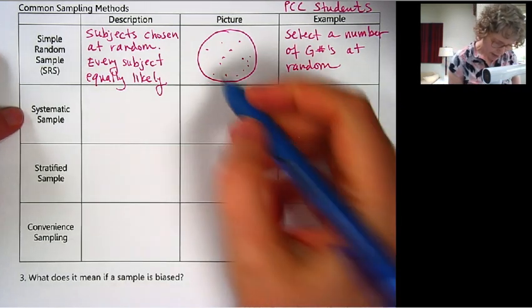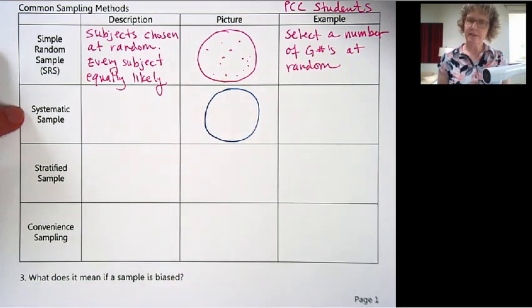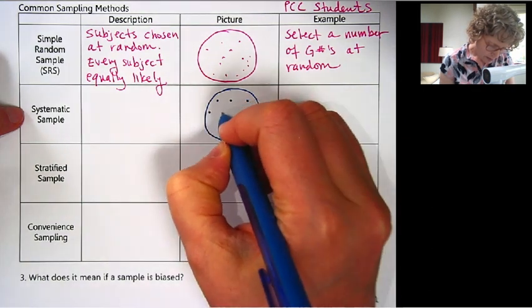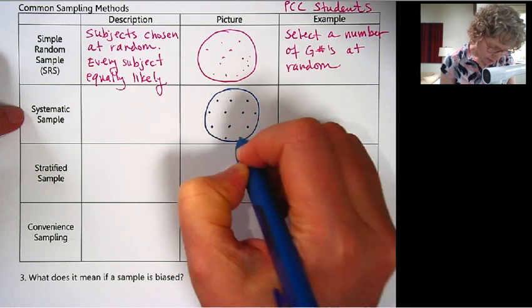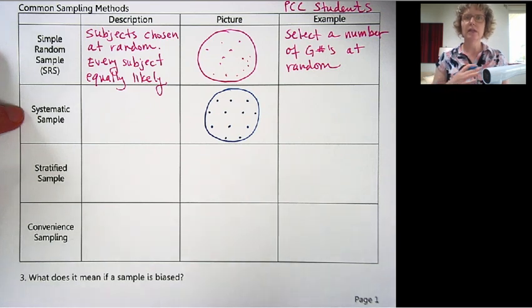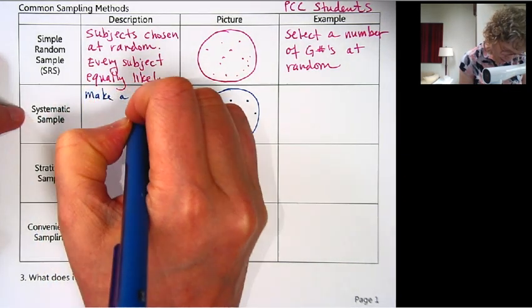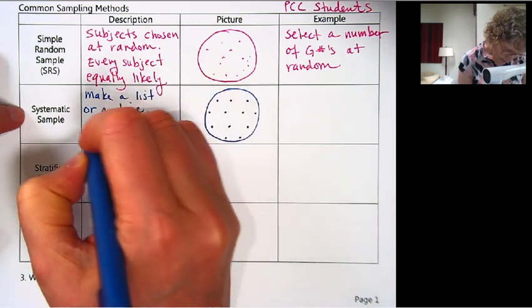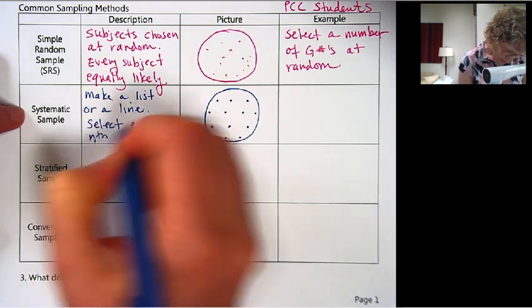The next one is a systematic sample. There are some times when a systematic sample might be easier. Systematic means you pick either from a list or a line every nth person or subject. So you get an even spacing. So description for this one is make a list or a line. Select every nth subject.